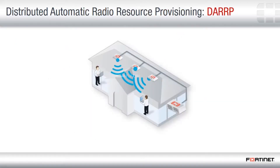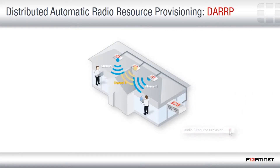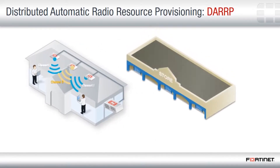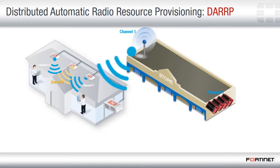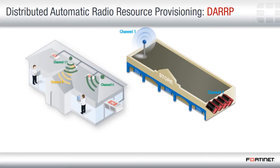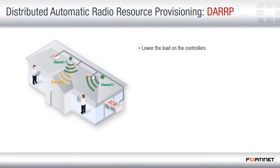Distributed Automatic Radio Resource Provisioning is enabled by checking the radio resource provision option. DARRP enables the controller to detect radio interference and reassign AP broadcast channels. This lowers the load on the controllers and avoids chatter between the APs. A new channel is selected every 30 minutes, using the whole channel spectrum.